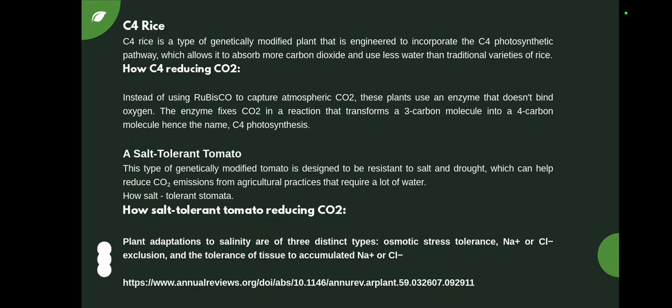The next example is salt-tolerant tomato. This type of genetically modified tomato is designed to be resistant to salt and drought, which can help reduce CO2 emissions from agricultural practices that require a lot of water.